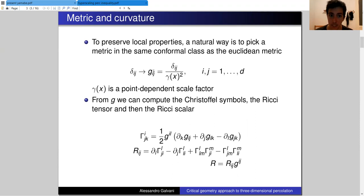This is the metric that we have to have, but then we also have to impose some constraints on the function gamma of x itself. We would like the system to be uniform, so some measure of the curvature has to be constant throughout the system.